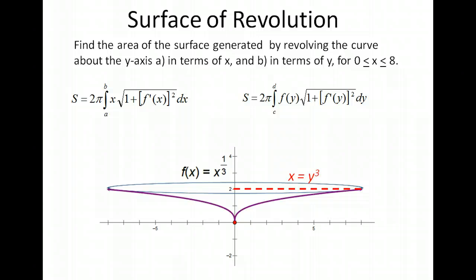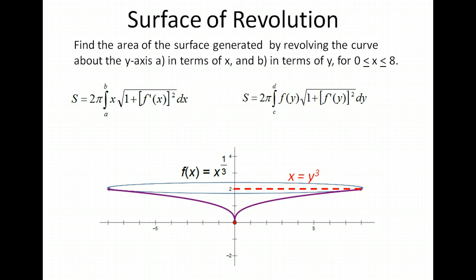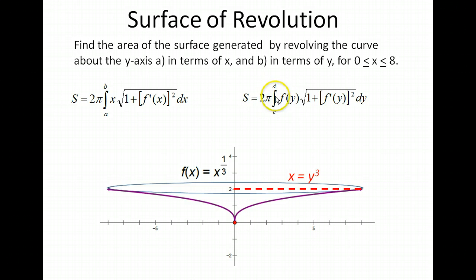We can also rewrite this formula. Instead of using x, we could use the function in terms of y — y to the third in this case — and then make the adjustment, turning everything into y values. We're also going to be turning our endpoints of integration into y values. On the first formula, we have from a to b — those are x values, so in this case from 0 to 8. On our second formula we have dy, so c and d must be y values — instead of 0 to 8, we would use 0 to 2. Sometimes it's easier to integrate in terms of x than y or vice versa, so you may have to do some trial and error to decide which one is best to use.